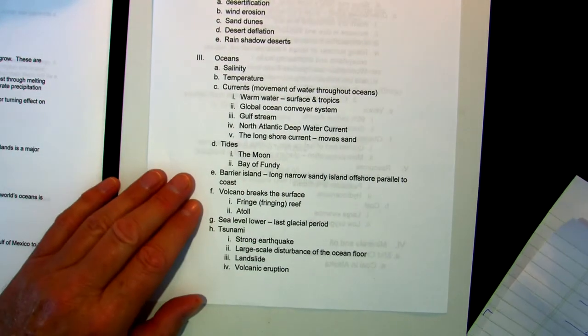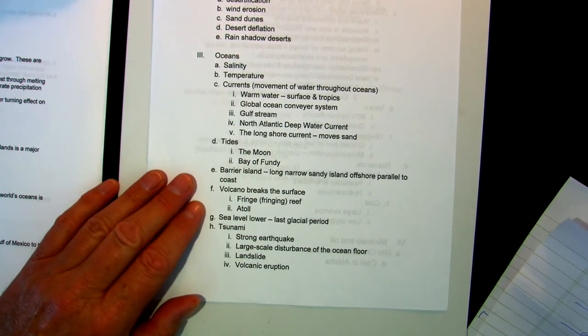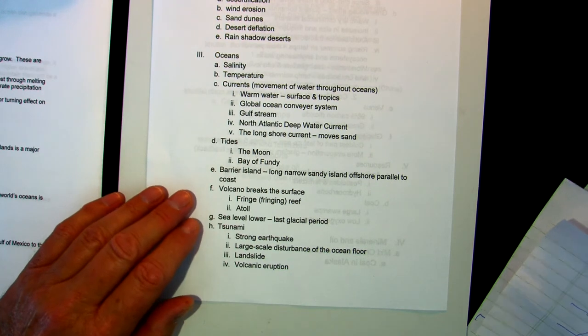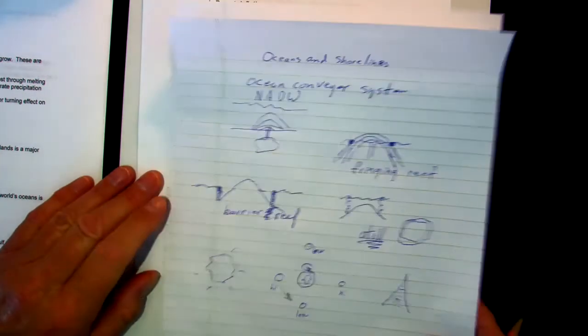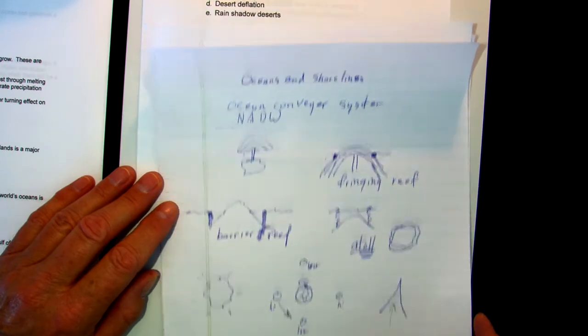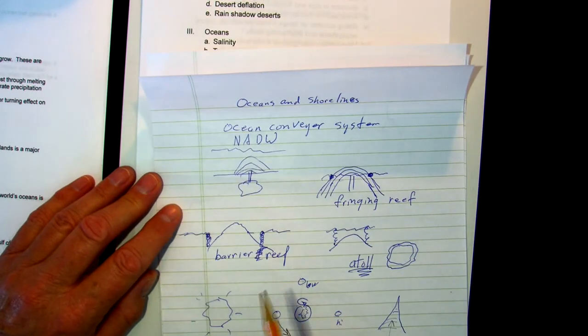We've already talked about barrier islands—long, narrow, sandy islands that run parallel to the coast. I'll talk to you a moment about fringing reefs, atolls and whatnot. You have hot spots come up in the mantle. We've talked about this before when we talked about plate tectonics.